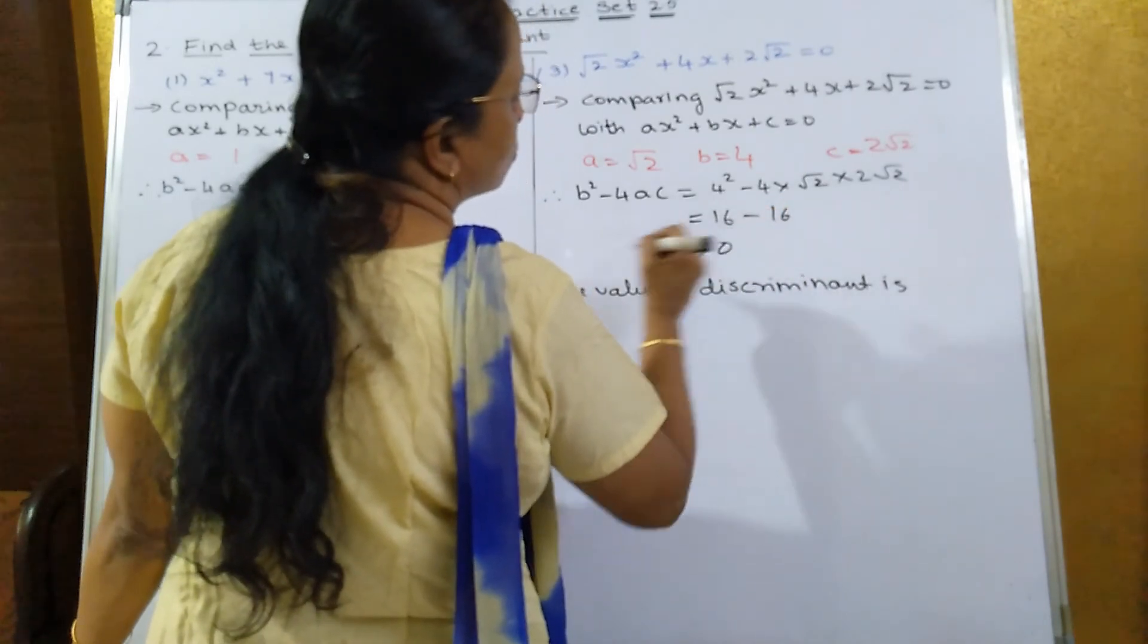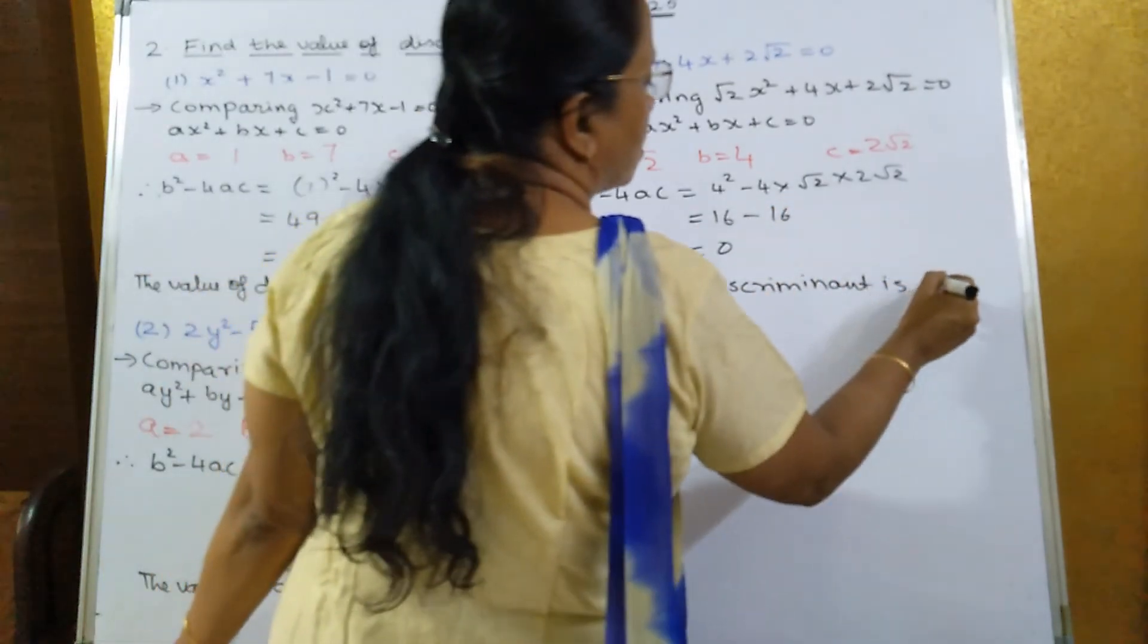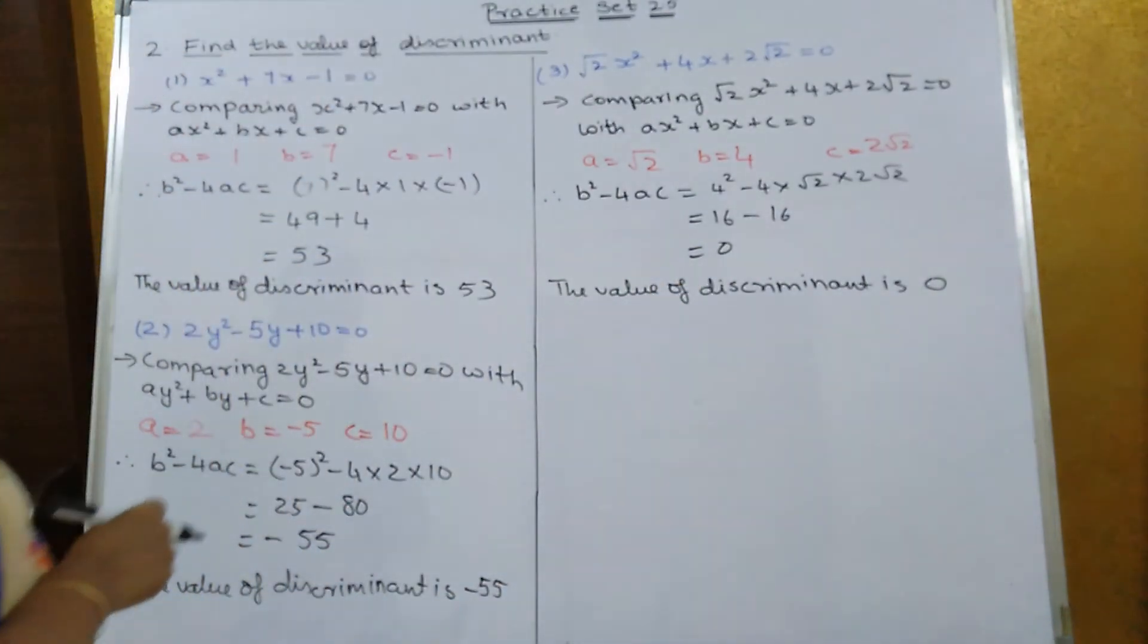So that is equal to 0. So the value of discriminant over here is what? 0. So this is how we are supposed to find out the value of discriminant.